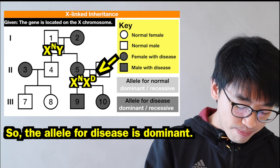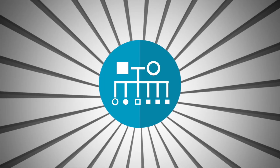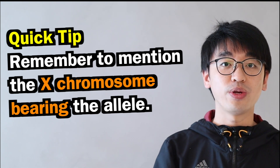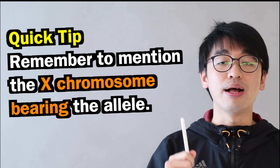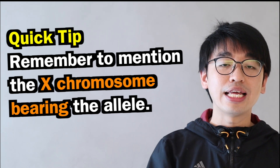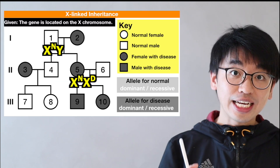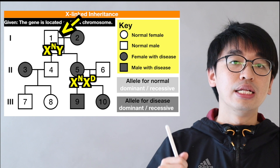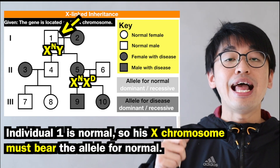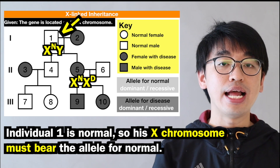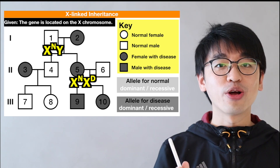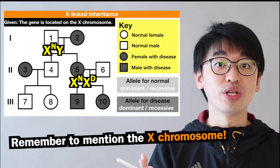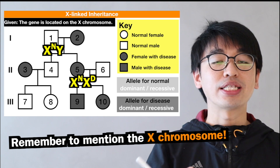A quick tip: when answering questions about X-linked inheritance, always mention that the allele is located on the X chromosome. For example, state that individual 1 is normal, so his X chromosome must bear the allele for normal. Do not simply say his allele is normal — you must specifically mention the X chromosome bearing that allele.